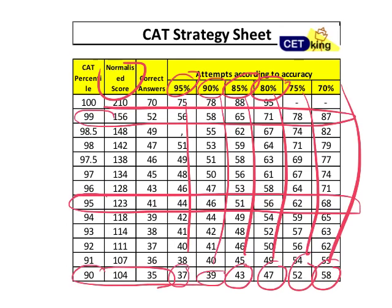CAT will always give you a normalized score, which is based on how other people or the toppers have performed. So these might not be the exact numbers — for example, 35 as the cutoff for 90 percentile might actually be 38 or 32 in reality. We have to account for that plus-or-minus variation. But while studying, we need a ball-park number, and these are the ball-park numbers we're going to use when giving mocks and tests.